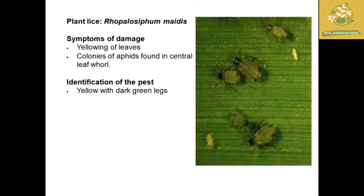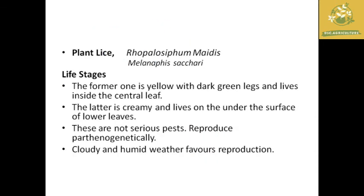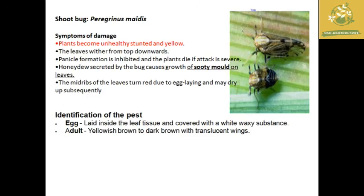Another pest in sorghum is plant lice (aphid), whose scientific name is Rhopalosiphum maidis. The symptom is yellowing of leaves with aphids colonized near the leaf whorl. They are yellow with dark green legs. They are parthenogenetically reproductive, living in the central leaf. It is not a serious pest in sorghum, but cloudy and humid weather favors reproduction.